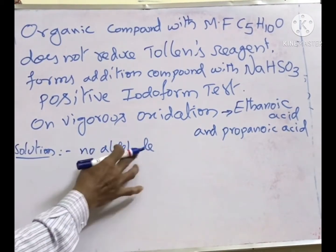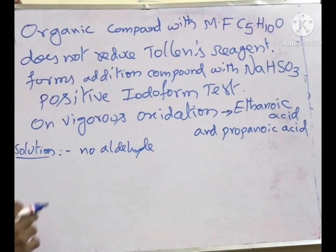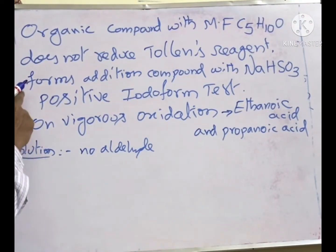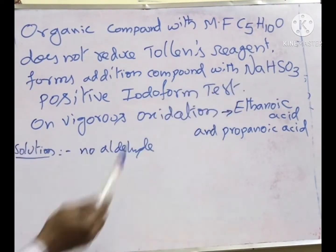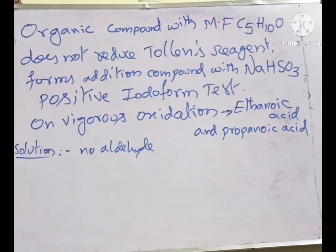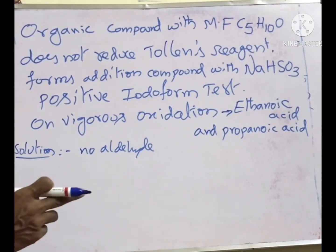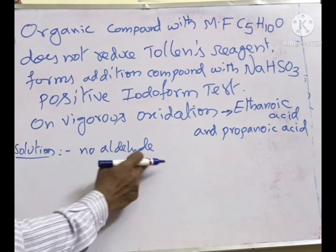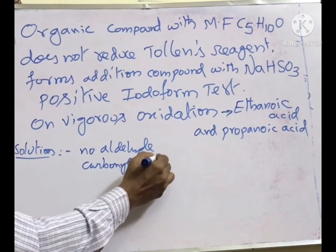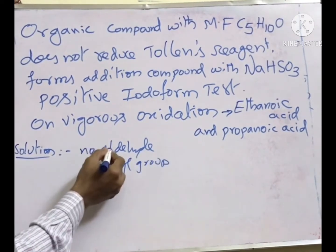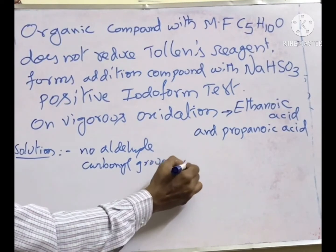We will write simply to rule out the possibilities. The second clue: it forms an addition compound with sodium hydrogen sulfite. All aldehydes and ketones form addition compounds with sodium hydrogen sulfite, hydrazine, and hydroxylamine. That means it is having a carbonyl group. In the carbonyl group you have two types: one is aldehyde, another is ketone. So it could be a ketone.